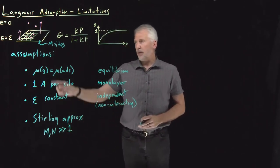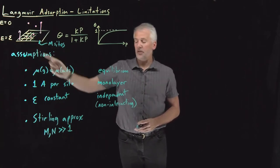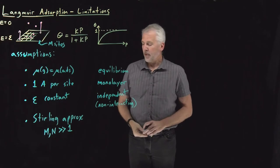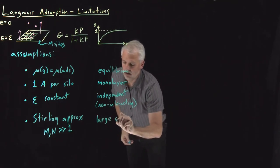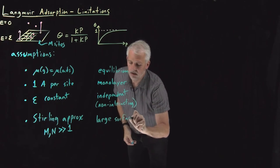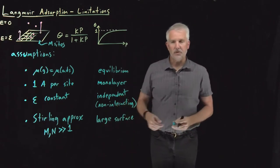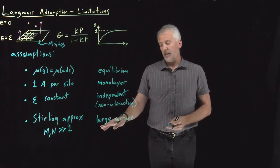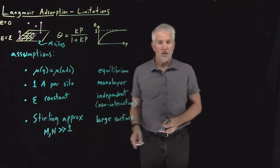So that's only going to be true if the number of binding sites is much larger than one and the number of molecules on the surface is much larger than one. That assumption that we've made in that case is that the surface is relatively large. And large is a relative term, of course.